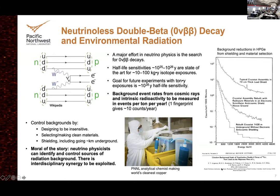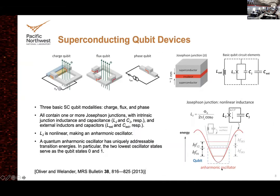The moral of the story is: if you have trouble with radiation in your environment and you've just told this to a bunch of neutrino physicists, we have totally solved this problem. We know what we should do. And so now the real talk about superconducting qubits — and we'll come back to why all that matters.